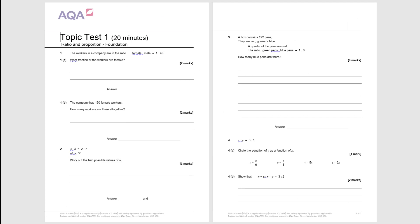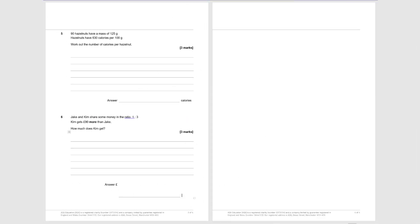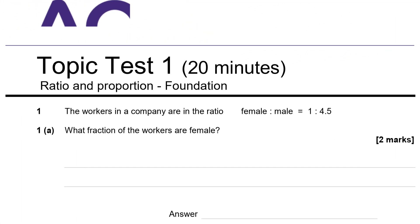OK, let's get started. I am just going to show the blank question paper, so if you don't have a copy, you can pause it and have a go at the questions first. Once you are finished, you can start again and look at the answers. Welcome along to another topic test. Today we are looking at ratio and proportion at foundation level, although it would be quite a good introduction to higher tier students as well.